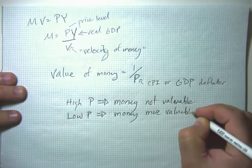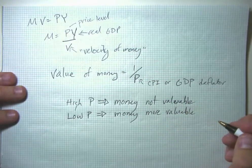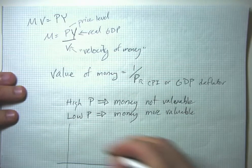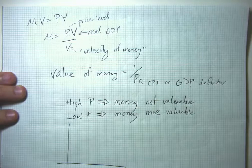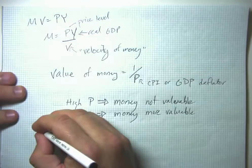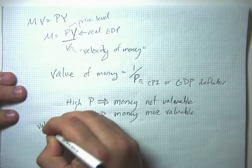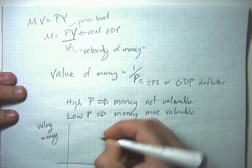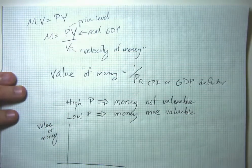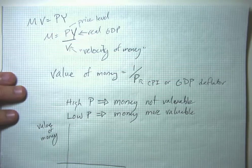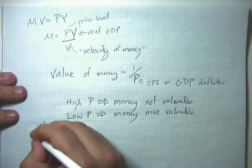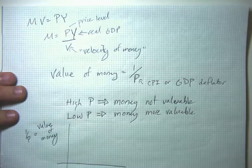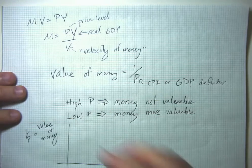So when I draw the supply and demand diagram for money, on the vertical axis I'm not going to have the price level, but rather the value of money. Because we're trying to measure the market for money, so the value or price of money needs to be on the vertical axis. And that in turn is going to be one over the price level.